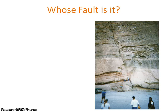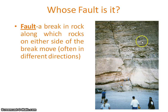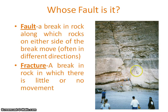Here you can view the fault plane. A fault is a break in rock along which rock on either side of the break moves — either side of the rock can move upwards or downwards. A fracture means a break in the rock in which there is little or no movement. If it is a fault plane there will be movement, but if it is a fracture, there will be no movement — just the rock split into two parts.